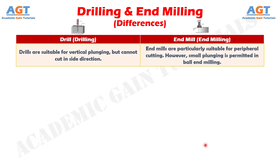Number five: drills are suitable for vertical plunging but cannot cut in the side direction, whereas end mills are particularly suitable for peripheral cutting. However, small plunging is permitted in ball end milling.